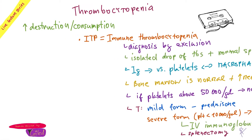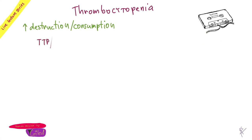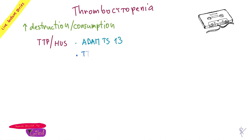Then I mentioned TTP — TTP-HUS. They have one common thing: ADAMTS-13. TTP means you're born with decreased levels of ADAMTS-13, so you're not cleaving your von Willebrand polymer. You have very large packs of von Willebrand and you are forming thrombi.